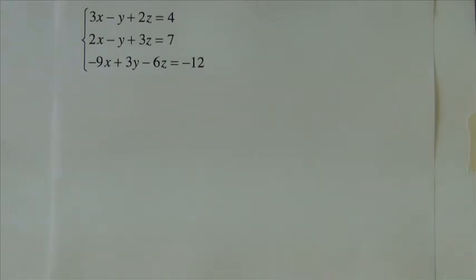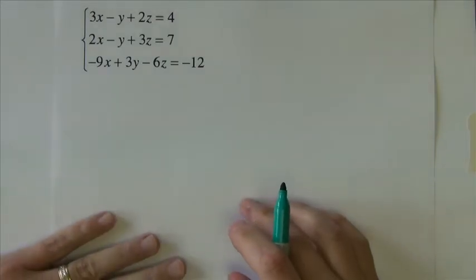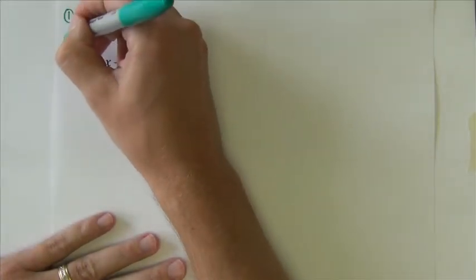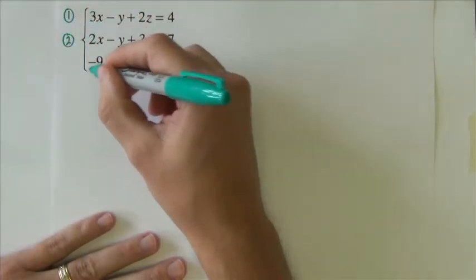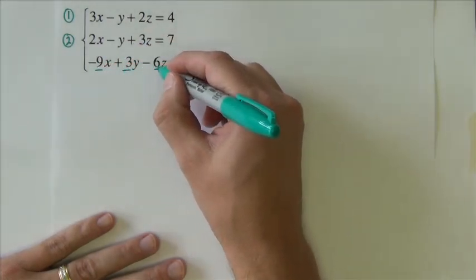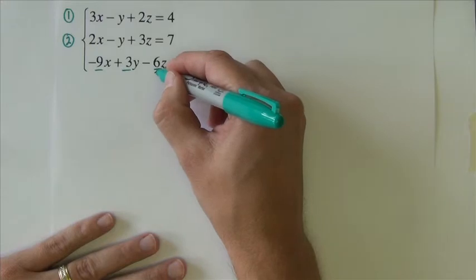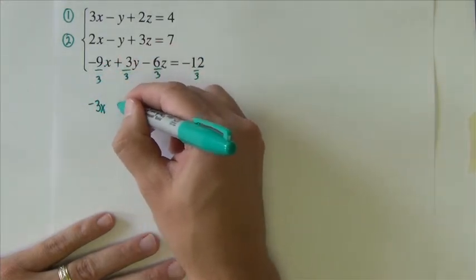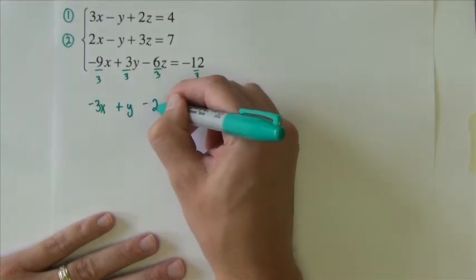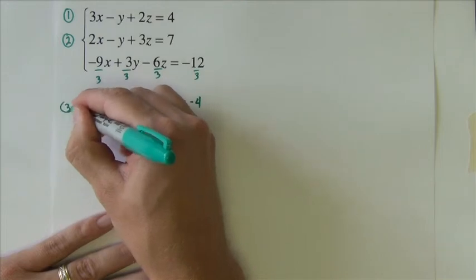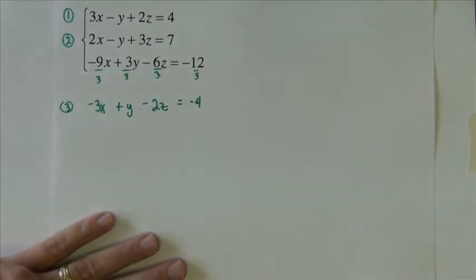This last example. I begin the same way as the other problems and then I label my equations. Equation 1, equation 2. When I look at equation 3, however, I notice that all the numbers here are divisible by 3. And I think my work is going to be a little bit easier if I'm looking at smaller numbers. So I'm going to go ahead and make this my equation 3.